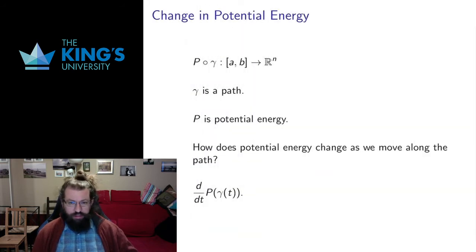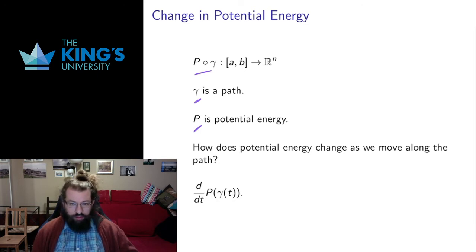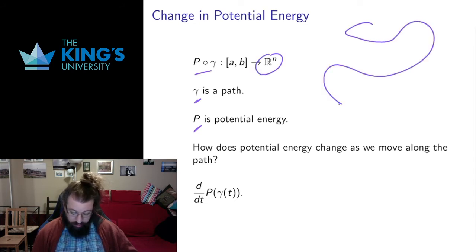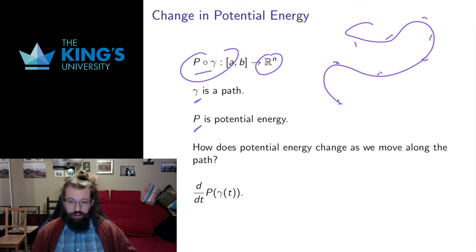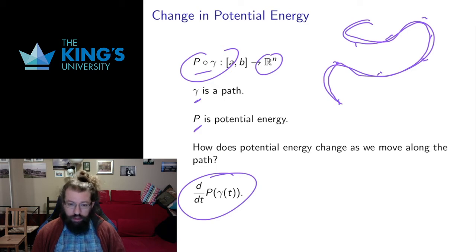I want to talk about what that means using the example of potential energy, which also has some nice historical importance. Say we have gamma as a path and P as the potential energy scalar field. We have some path going through Rn and we have the potential energy along that path. This function tells us how the potential energy changes as we move along the path. So the derivative is the rate of change of potential energy — as we move along the path in Rn, is it increasing? Is it decreasing? How quickly? Where are the maximums and minimums?